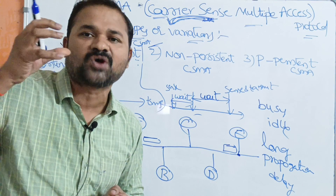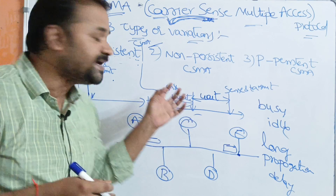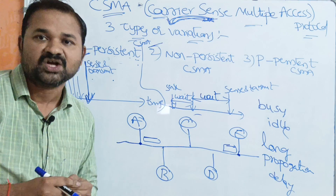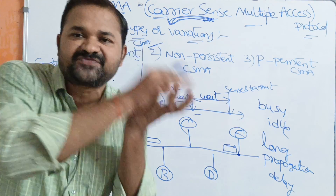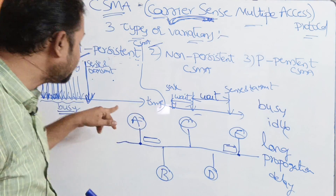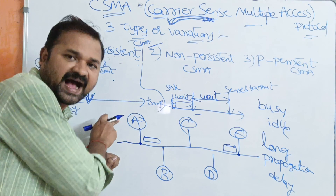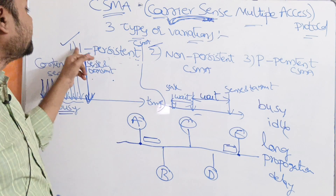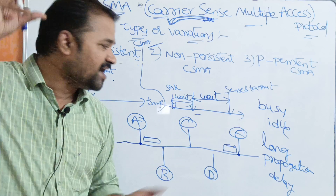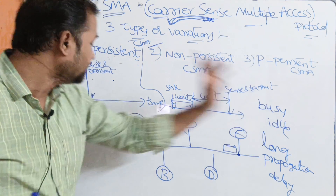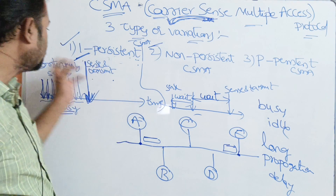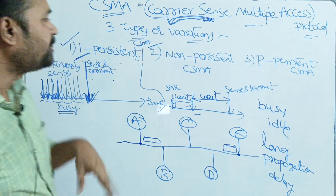This is called 1-Persistent CSMA because the frames are transmitted with a probability of 1, which is the maximum probability value. Whenever the channel is idle, the station will automatically transmit the data with a probability of 1, which is why it is called 1-Persistent CSMA.